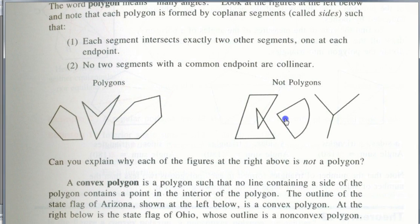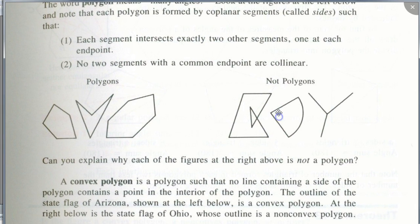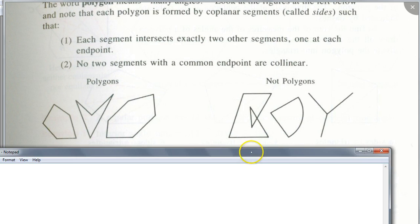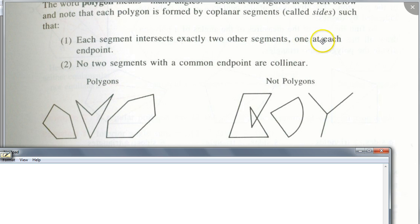By the definition of what we just wrote down — there were two parts — the ones on the left: do you see how each of the segments intersects exactly two other segments, one at each endpoint? And secondly, no two segments with a common endpoint are collinear. Does that make sense?